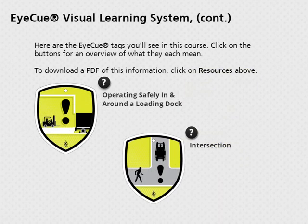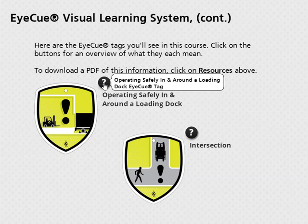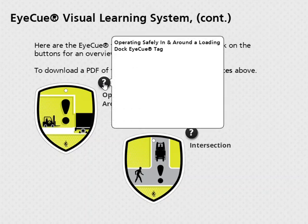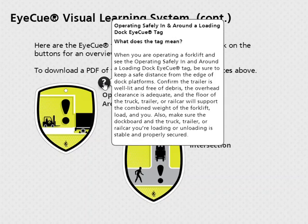Here are the IQ tags you'll see in this course. Click on the buttons for an overview of what they each mean. To download a PDF of this information, click on Resources above.